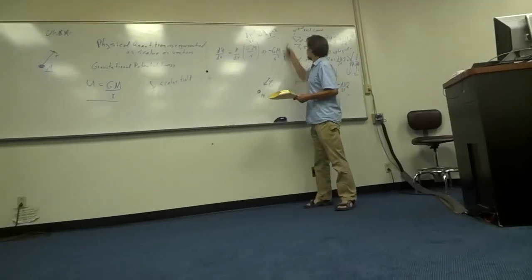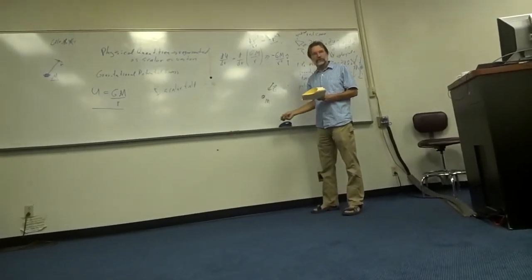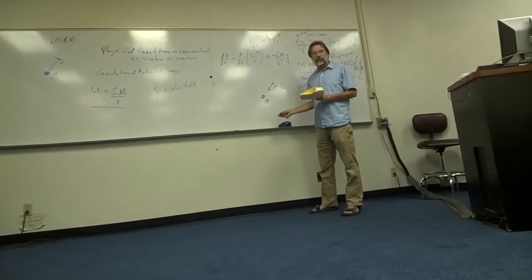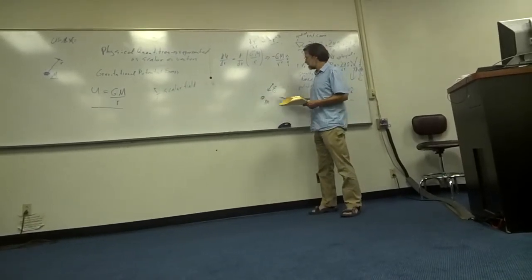So it goes from just a number to something that has magnitude and direction. But this quantity, like this quantity, varies spatially. Correct? So it'll have a variation in space relative to M.